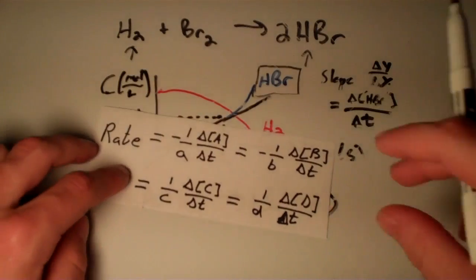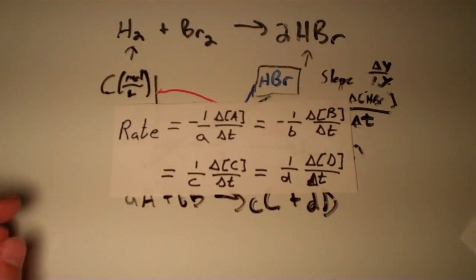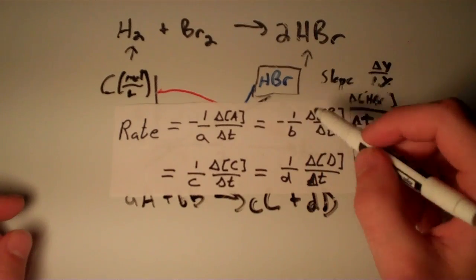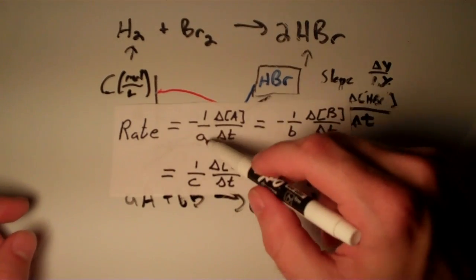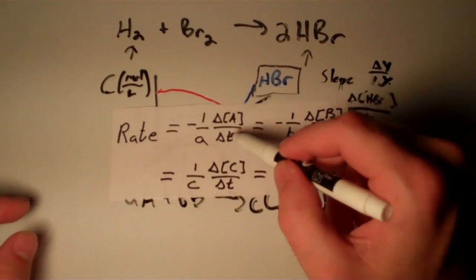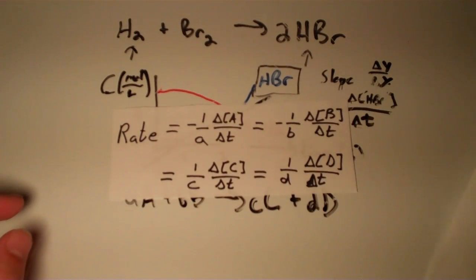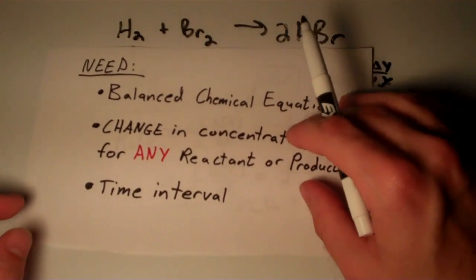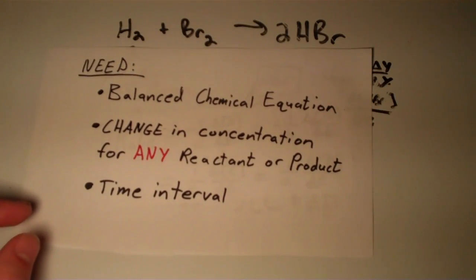As you might notice, the three variables in this equation—in each of these terms—is the coefficient, the change in concentration, and the change in time. And of course, in order to get that coefficient, again you need the balanced chemical equation. If the equation is not balanced, then it'll be wrong. All right, I hope this video helps and some more kinetic stuff on the way.